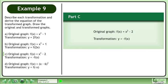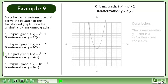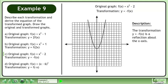In part c, the graph of f of x equals x squared minus 2 is transformed by the equation y equals negative f of x. The transformation y equals negative f of x is a reflection about the x-axis.